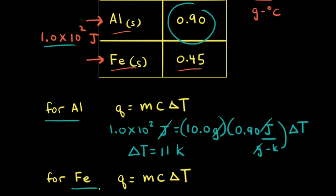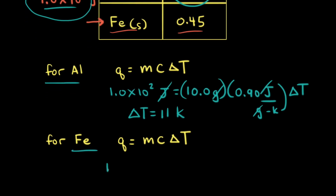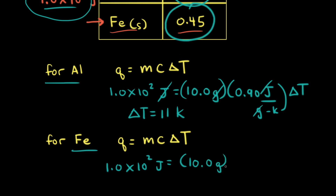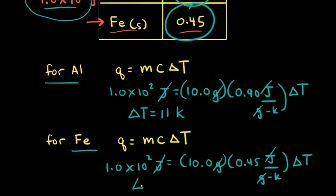Now let's do the same calculation for iron. Adding 1.0 × 10² joules to 10.0 grams of iron: 1.0 × 10² J = (10.0 g)(0.45 J/g·K)(ΔT). Joules and grams cancel, and we get ΔT = 22 Kelvin, or 22 degrees Celsius.